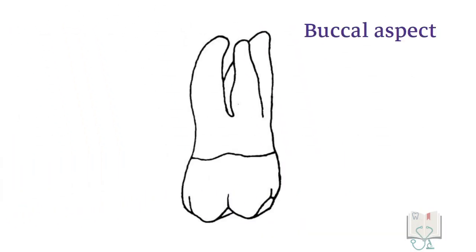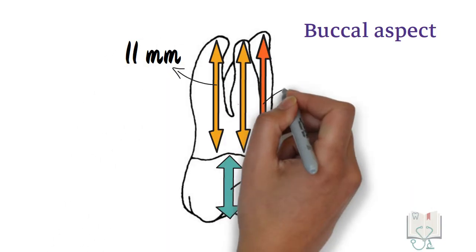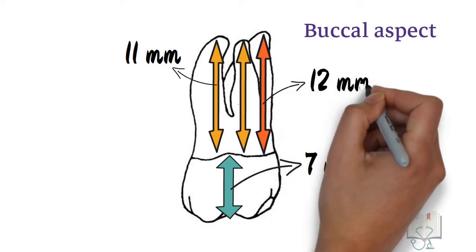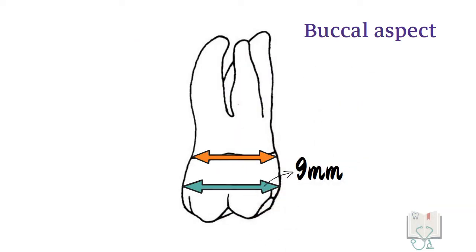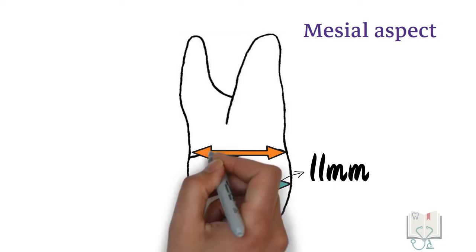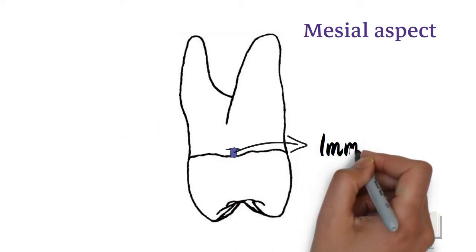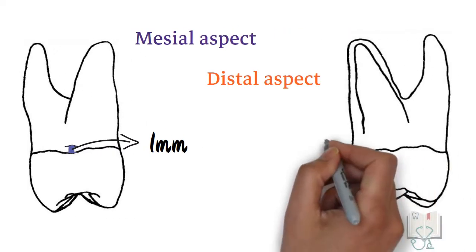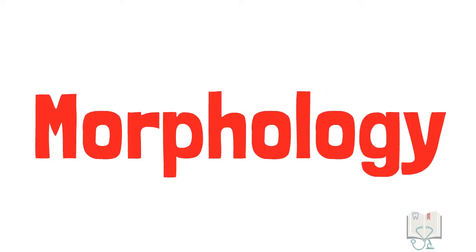Coming to its dimensions: the cervico-occlusal length of the crown is 7 mm; the length of both buccal roots is 11 mm and the lingual root is 12 mm. The mesiodistal diameter of the crown is 9 mm and at the cervix it is 7 mm. The buccolingual diameter of the crown is 11 mm and at the cervix it is 10 mm. The curvature of the cervical line on the mesial side is 1 mm and on the distal side it is flat.